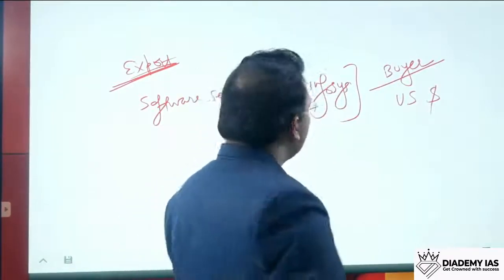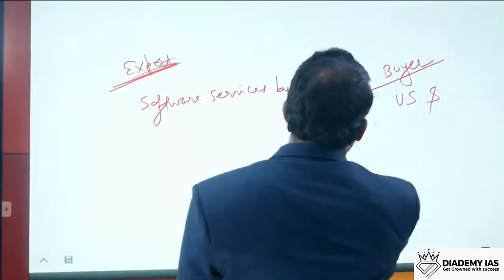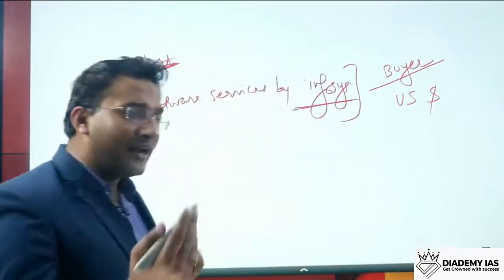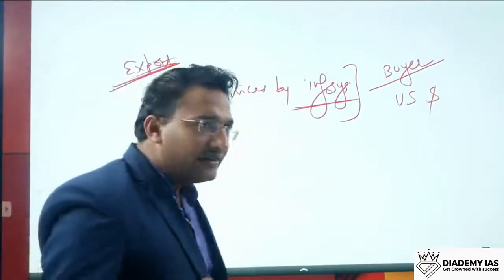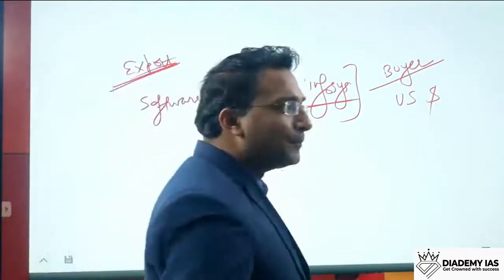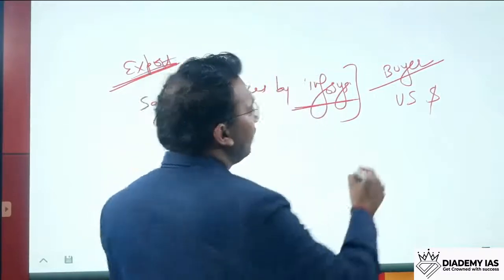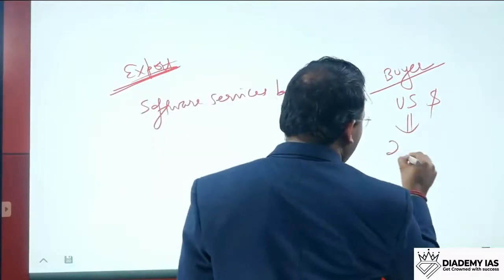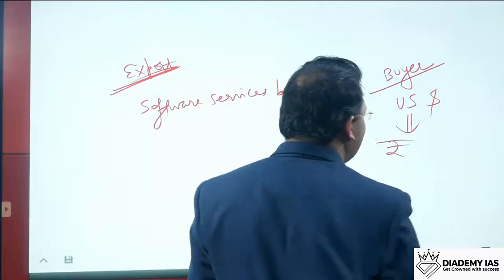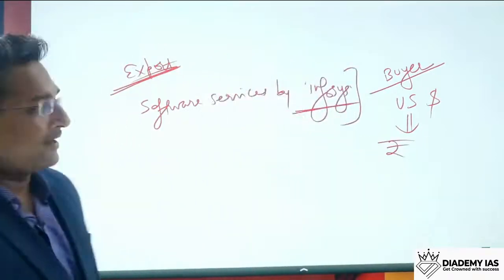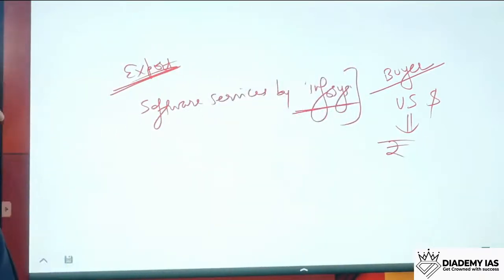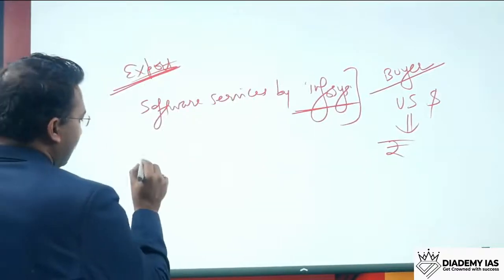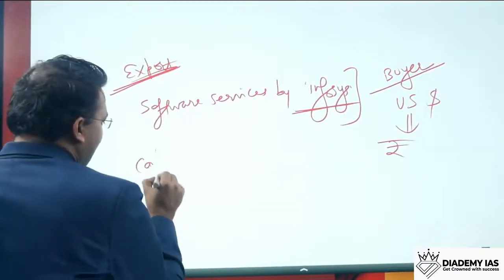The buyer of the service can pay in US dollars. Infosys is located in India; it has to pay salaries and other expenses. So it will convert the US dollars into Indian rupees so that it can use this amount in the Indian market. So import, export, capital movement, etc. — all these require foreign exchange.